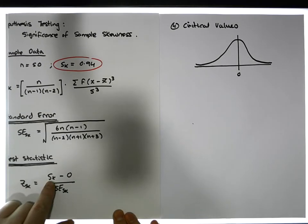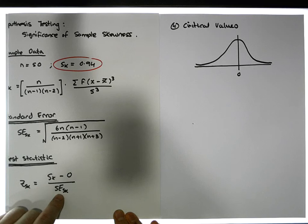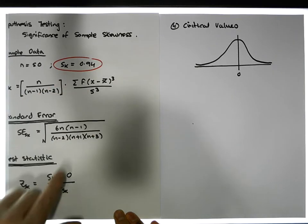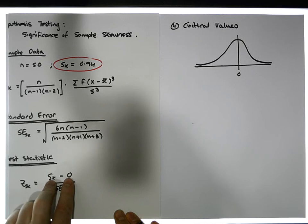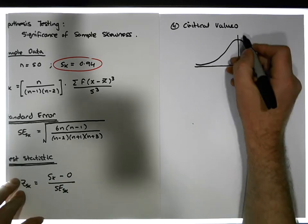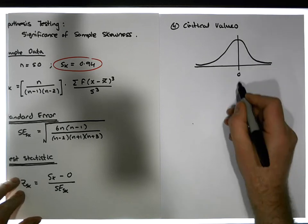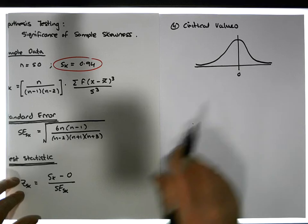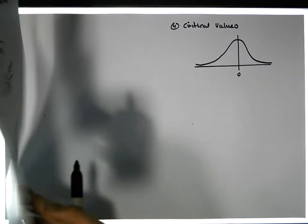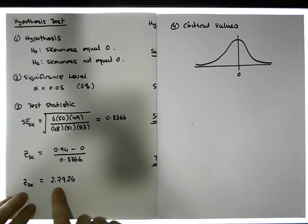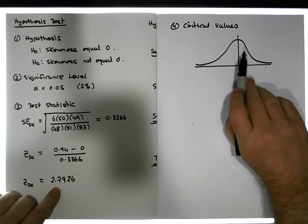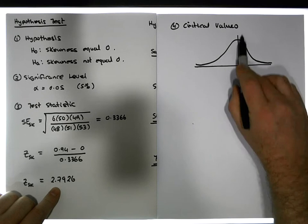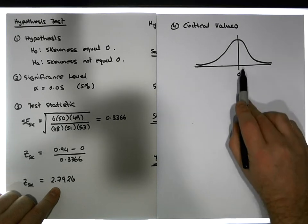The test statistic is the sample skewness minus 0, all over the standard error. If the sample were symmetric, its skewness should be 0, and our test statistic should be 0. A z-score of 0 would indicate a perfectly symmetric distribution. Our test statistic is 2.79, which sits in the right-hand tail.